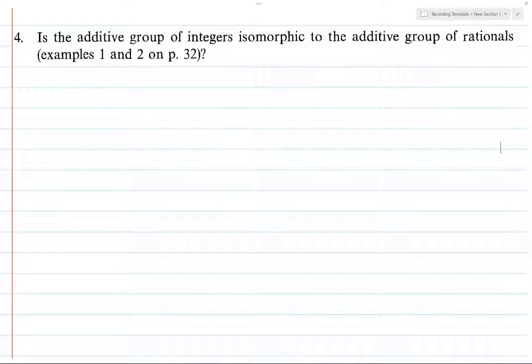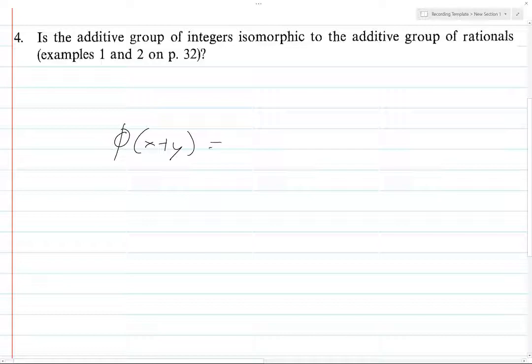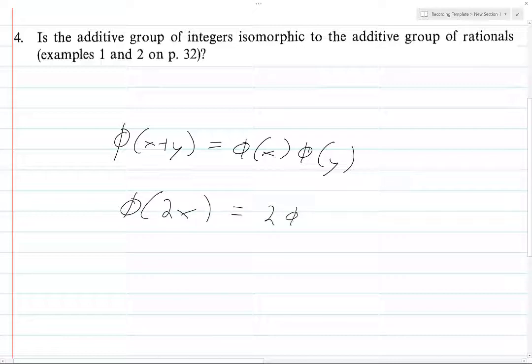One thing that you have is a type of linearity where, if you have a homomorphism, then φ(x+y) equals φ(x) plus φ(y). What this really is, if you make this just x and x, is φ(2x) equals 2φ(x).